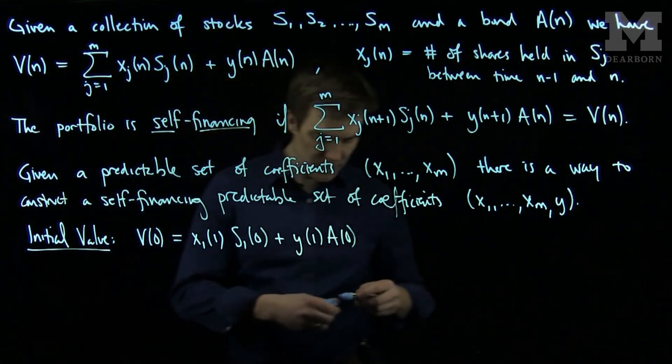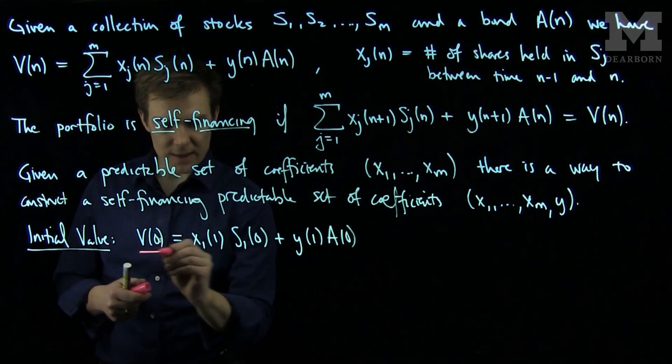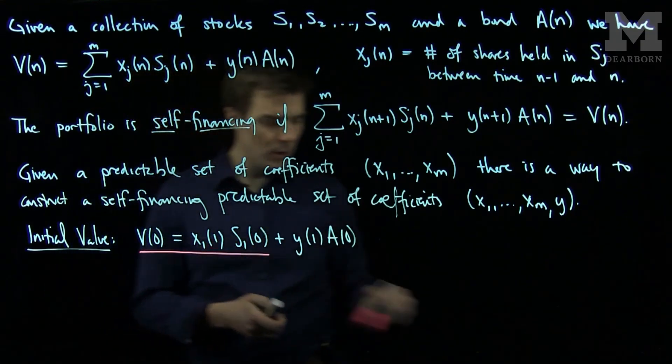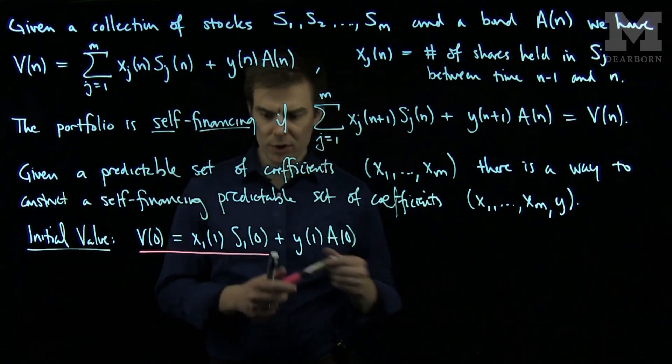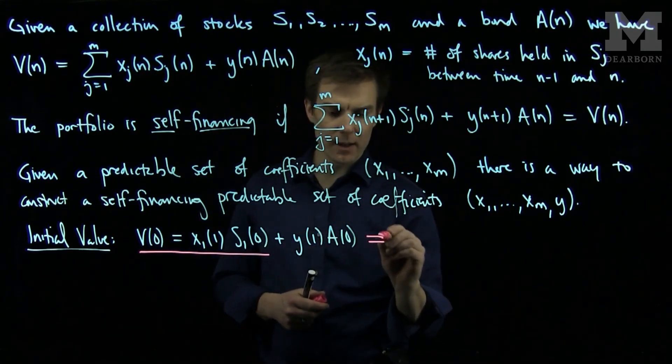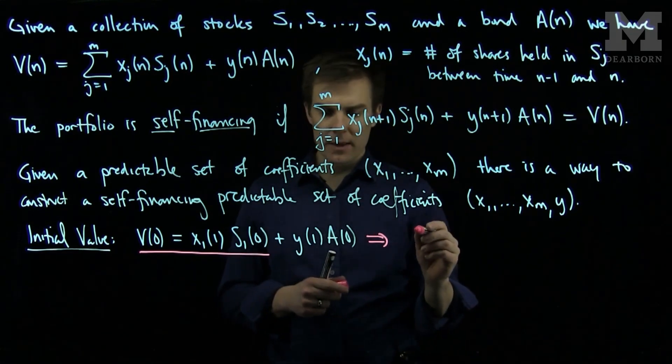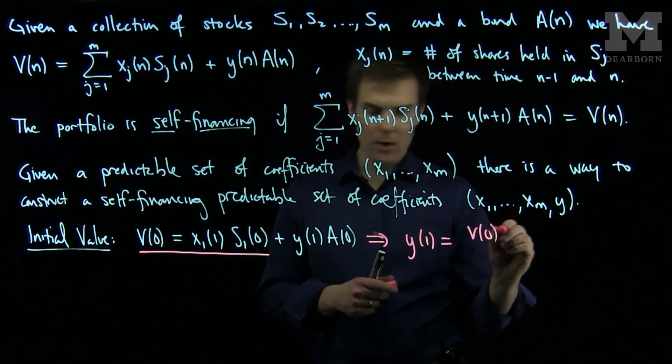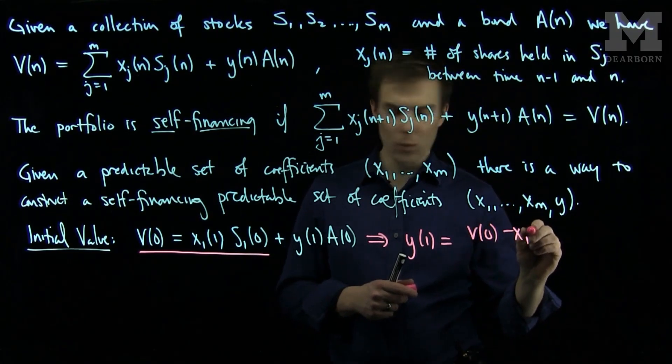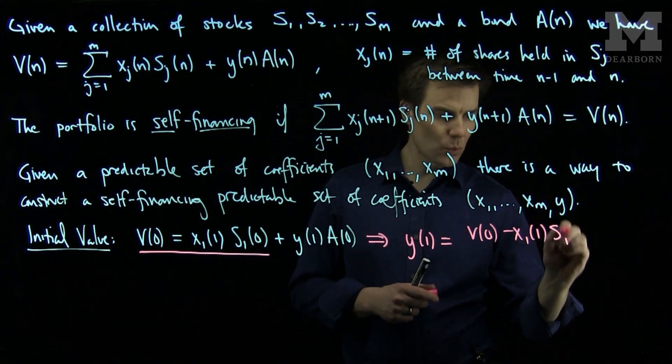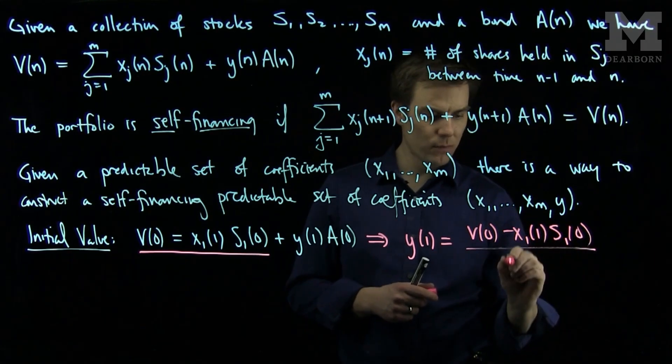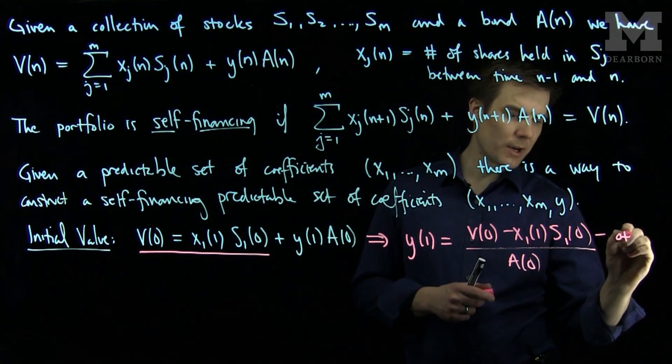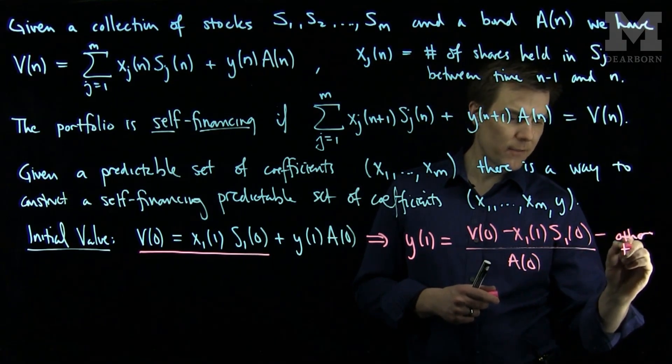If at the initial time we just had X1 stocks of S1 at time 0, we could solve this equation for Y1. This would tell us that Y1 would be V(0) minus X1(1) S1(0) over A(0), and there would be minus other terms if there were more stocks.